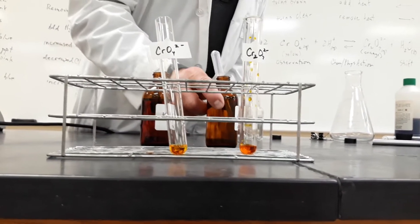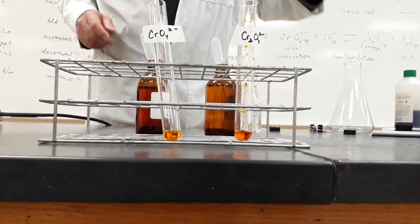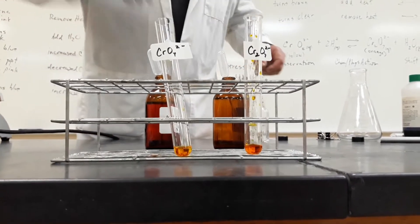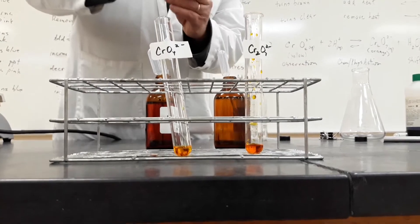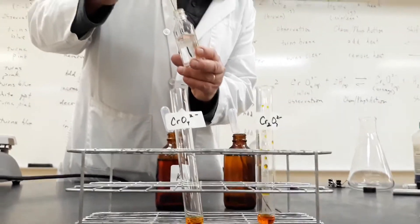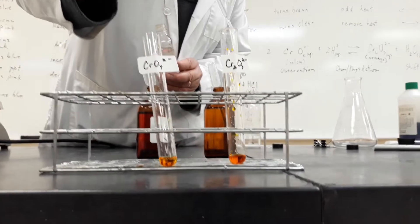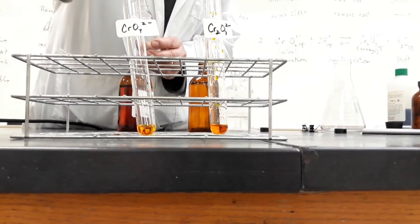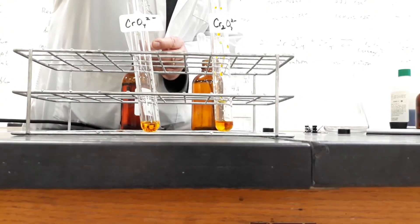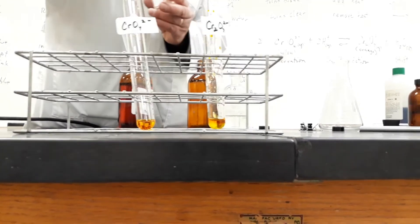Then we're going to add sodium hydroxide to the orange one, the dichromate solution. And we'll go drop by drop. And right away, we see it turns yellow.